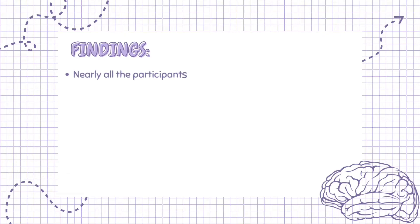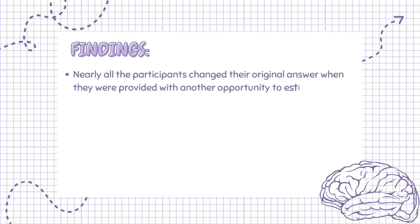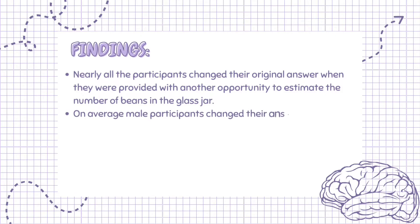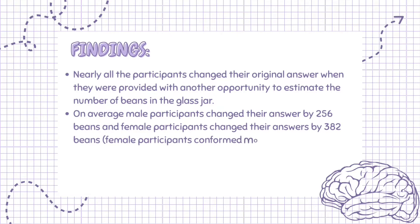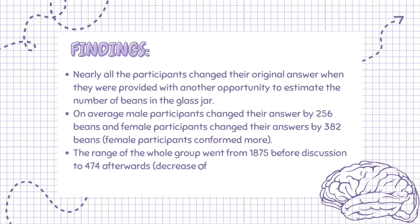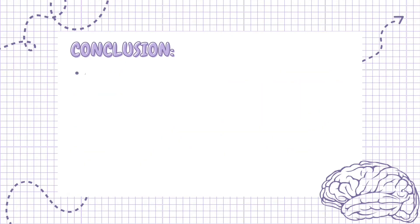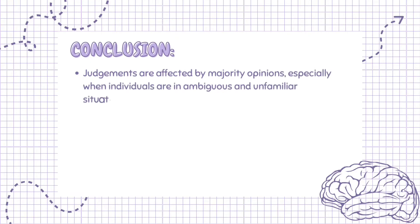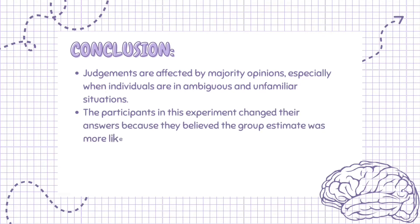Jeunesse found that nearly all the participants changed their original answer when provided with another opportunity to estimate the number of beans in the glass jar. On average, male participants changed their answer by 256 beans and female participants changed their answers by 382 beans — female participants conformed more. The range of the whole group went from 1875 before discussion to 474 afterwards, a decrease of 75%. Jeunesse concluded that judgments are affected by majority opinions, especially when individuals are in ambiguous and unfamiliar situations. The participants changed their answers because they believed the group estimate was more likely to be right than their own individual estimate.